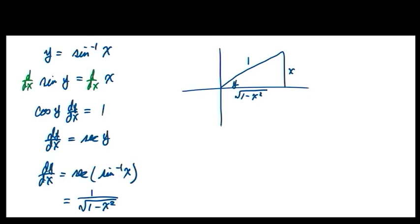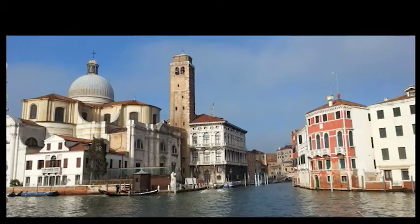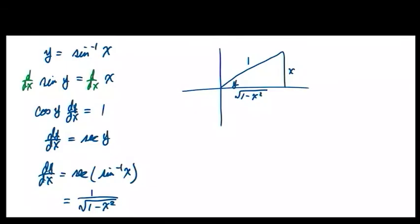So when it asks us to find the derivative and inverse sine is part of the function, we derive it like this every time. You don't really have to write the intermediate trig step because once you have sine y = x, you can go directly to the answer. From that line you can go here directly.